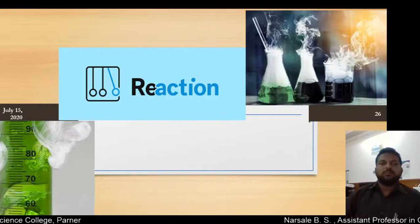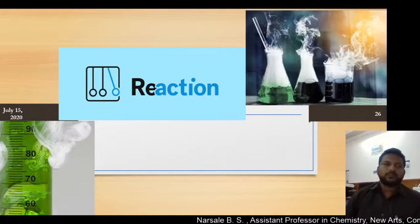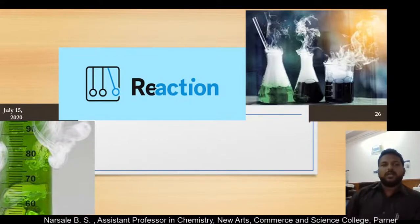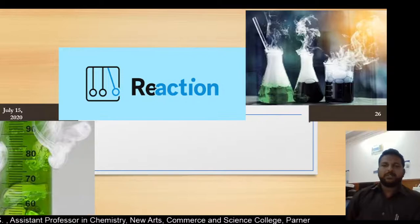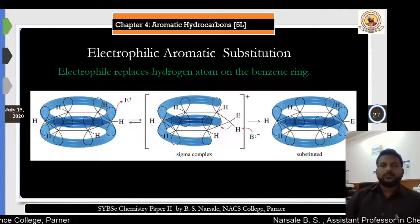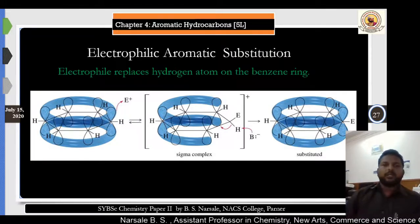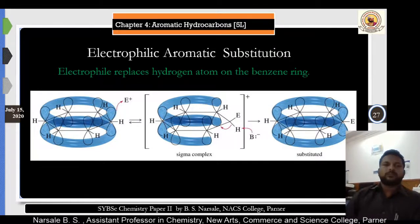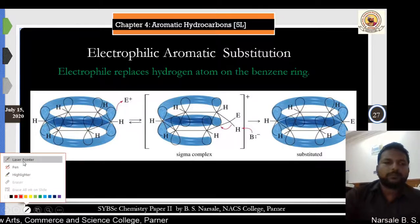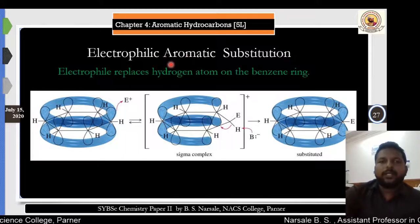Now we will move towards the next part, that is reactions. Which are the different reactions that occur over the benzene molecule? For that purpose we look at the structure of benzene. We are going to perform the reaction that is electrophilic aromatic substitution.